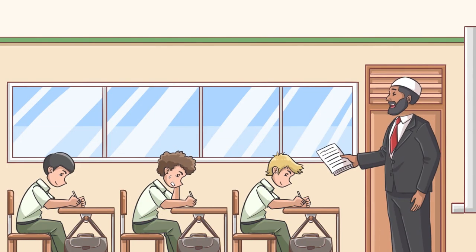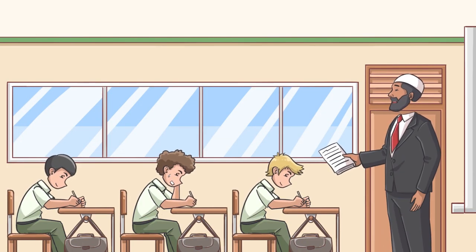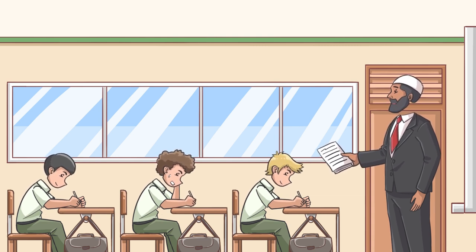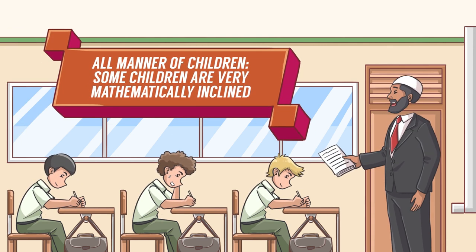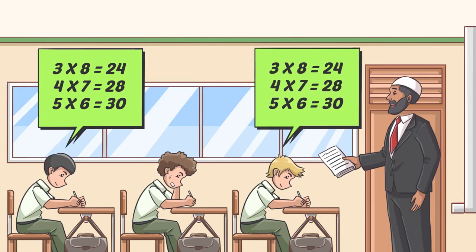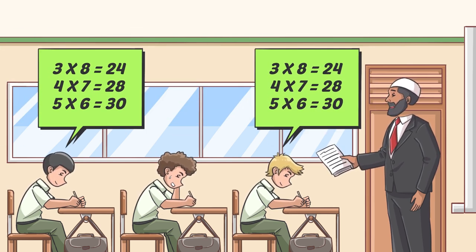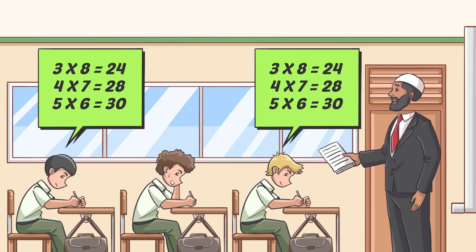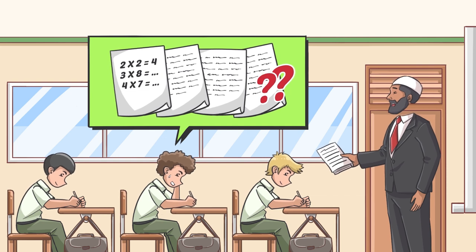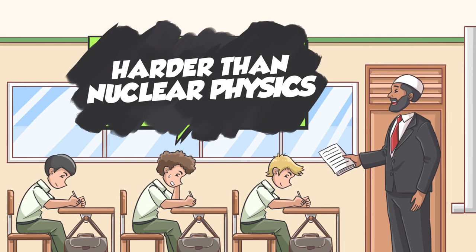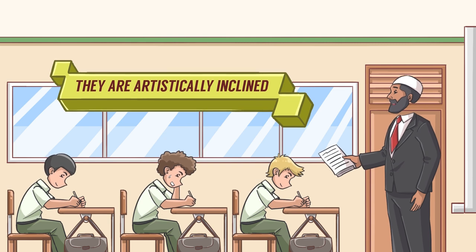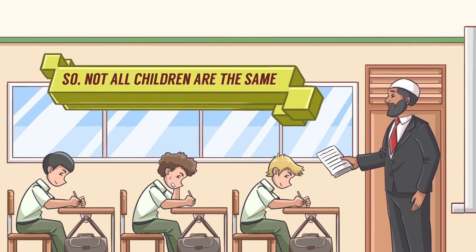Let's take the example of a classroom. There are all kinds of kids in a classroom. I used to teach third grade math a long time ago. All manner of children — some children are very mathematically inclined, they can do the entire multiplication problem in their head and don't even touch the paper. Other kids are solving three times eight on four pages of paper and still can't solve it, because to them it's harder than nuclear physics. They're artistically inclined. Not all children are the same.